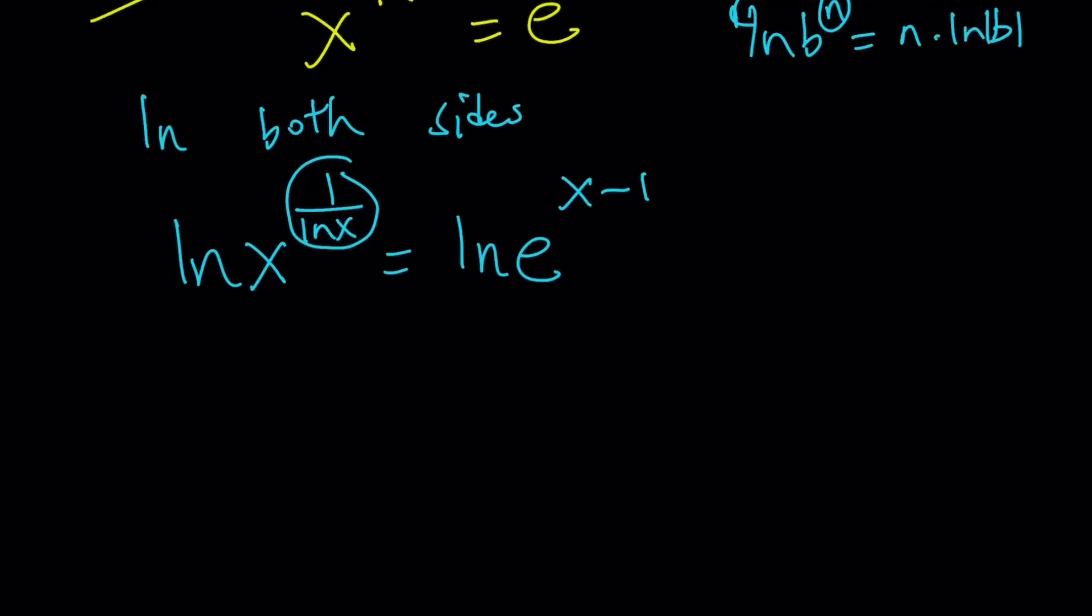1 over ln x is also going to be positive. Well, I shouldn't say that, because in order for ln x to be positive, x needs to be greater than 1. And we're going to see what happens. Anyways, I'm just going to go ahead and move this forward.